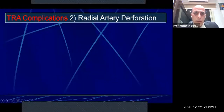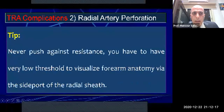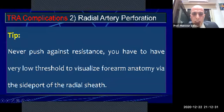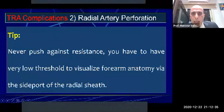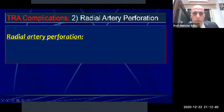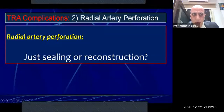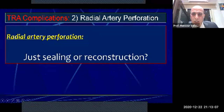The second complication is radial artery perforation. A key tip: for any interventional cardiologist, never push against resistance. You must have a very low threshold to visualize the forearm and arm anatomy via the side port of the radial sheath — a very low threshold once you encounter any resistance. Regarding sealing versus reconstruction of perforation: sealing means external compression stops bleeding but occludes the artery, whereas reconstruction maintains the vessel while achieving hemostasis.